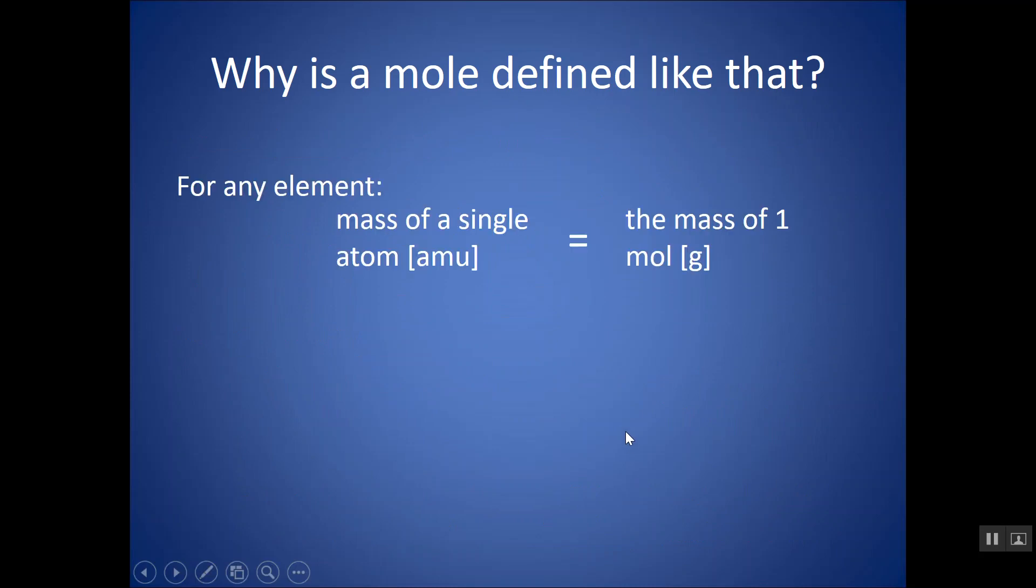Why is a mole defined like that? For any element, the mass of a single atom in AMU is going to be the same number as the mass of one mole, but in grams. For instance, one single atom of chlorine weighs 35.5 AMU. That's the atomic mass on the periodic table, but it has the units of AMU, atomic mass units.